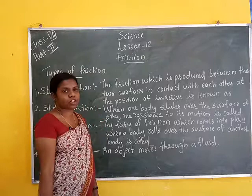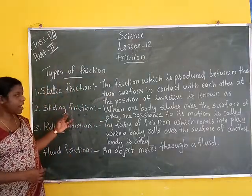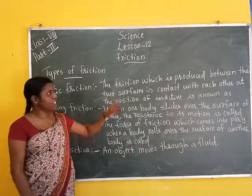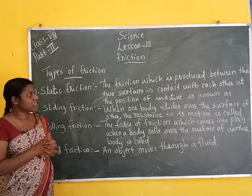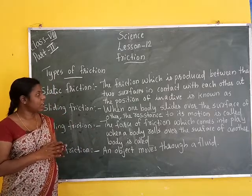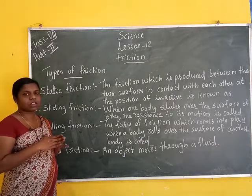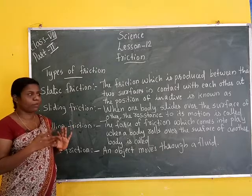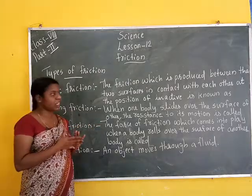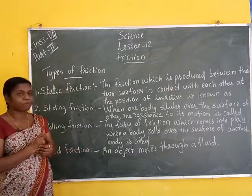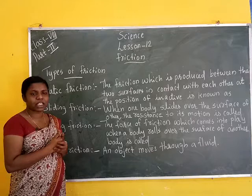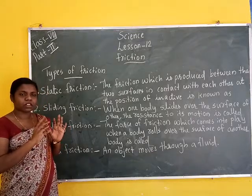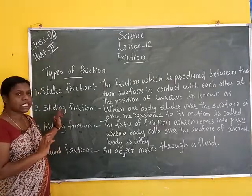To recap: the four types of friction are static friction, sliding friction, rolling friction, and fluid friction. Static friction is produced between two surfaces in contact at a position of inactivity — for example, pushing a heavy box that does not move. Sliding friction occurs when one body slides over the surface of another — the box moves slightly when pushed harder.